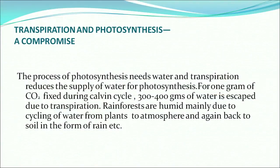Transpiration and photosynthesis are called a compromise. The process of photosynthesis needs water, and transpiration reduces the supply of water for photosynthesis. For 1 gram of CO2 fixed during the Calvin cycle, 300 to 400 grams of water escapes during transpiration. Rainforests are humid mainly due to cycling of water from plants to atmosphere and back to soil in the form of rain. Transpiration makes absorption possible in some way or the other.